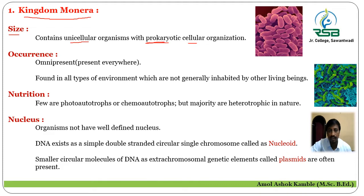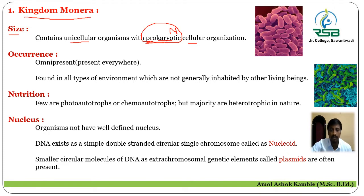The organisms in Kingdom Monera are unicellular in nature and they show prokaryotic type of cellular organization, meaning they show a primitive type of nucleus. The nucleus is the controlling center of the cell. That is the first characteristic regarding size. Now regarding occurrence — where the organisms in Kingdom Monera are present.